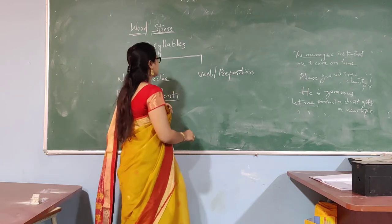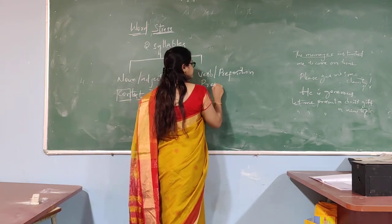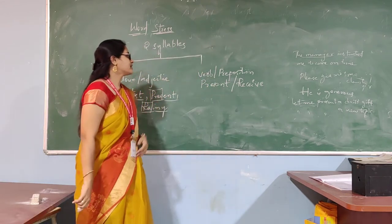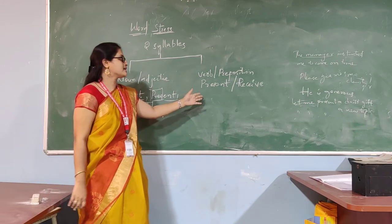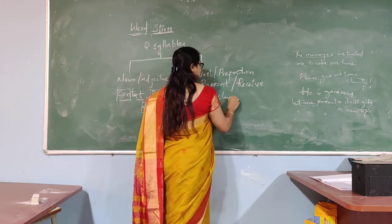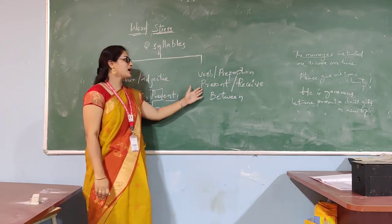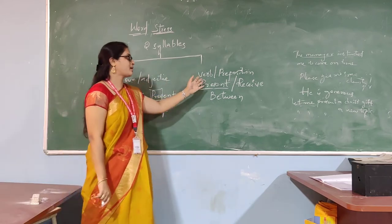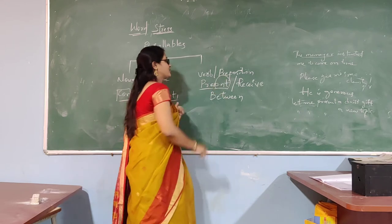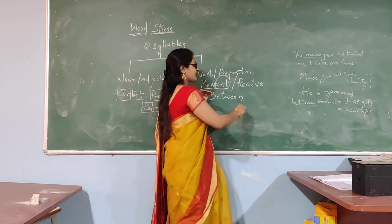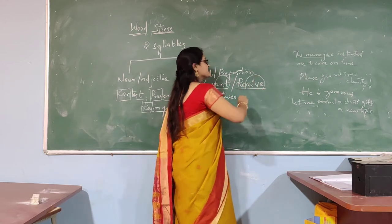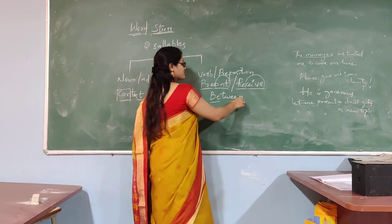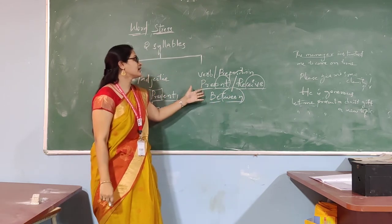Now the second type of two-syllabic words: 'present' and 'receive.' Here we are considering the word 'present' as a verb. If the word happens to be a preposition or verb, then we stress syllable number two. Similarly 'receive' — 're' and 'ceive' — we have two syllables and we stress syllable number two, because this word is a verb. And 'between' — stressing syllable number two.